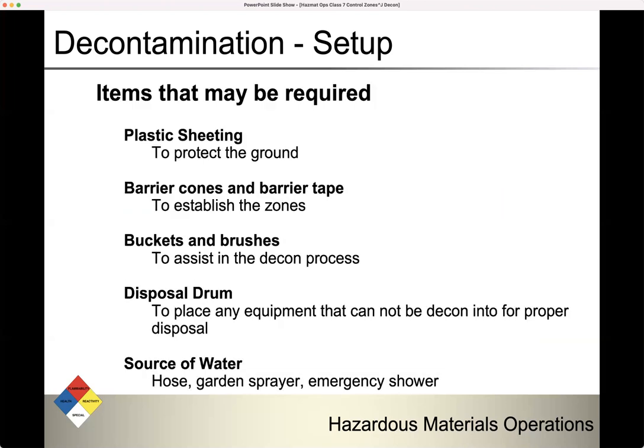Here are some things that might be required for your decontamination setup: plastic sheeting or plastic tarps to protect the ground; barrier cones and barrier tape to establish your control zones so people know where the warm zone and hot zone start; buckets and brushes; a disposal drum for equipment that cannot be decontaminated for proper disposal; and a source of water — a fire truck with hose, garden sprayer, or emergency shower.